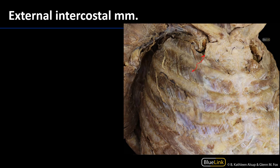There are three layers of muscles that we are responsible for. The most superficial are called the external intercostal muscles. These external intercostal muscles have fibers running inferomedially — from the rib above to the rib below in this inferomedial direction. They're more complete posterolaterally and in the anterior they're represented more by their fascia, giving it a more membranous appearance. When they contract, they pull ribs upward and outward, increasing the volume of the thoracic cavity and aiding in inspiration.